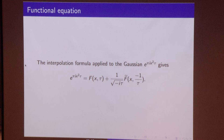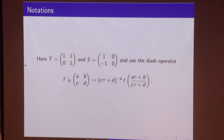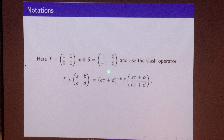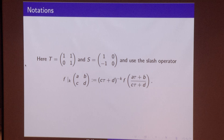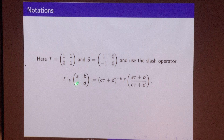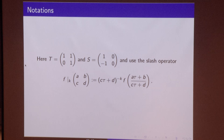The interpolation formula will be equivalent to a certain identity. To work with this more easily, we introduce some notation. We let T be a matrix in SL(2,Z), and S be another matrix — noting that S is not in SL(2,Z) because the one and zero have to switch places for determinant one. We also introduce the slash operator: if f is a function in the upper half plane and (a,b;c,d) is a matrix in our group Gamma_1, then this matrix acts on our function in a specific way. You may recall that one of the conditions for modular forms was exactly that this slash operator does not change our function.